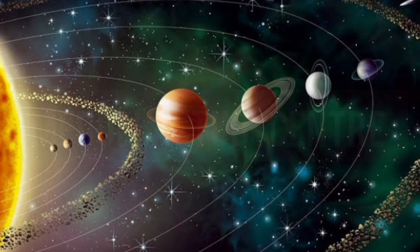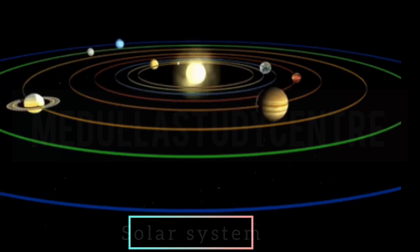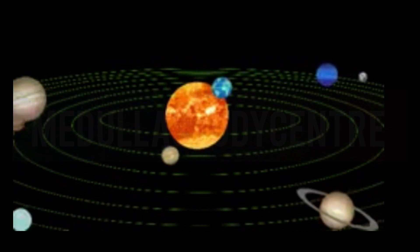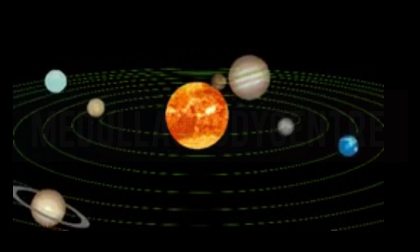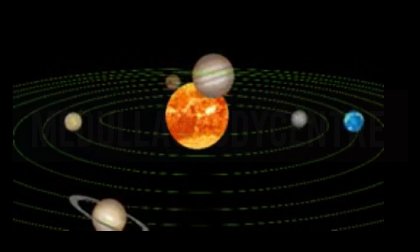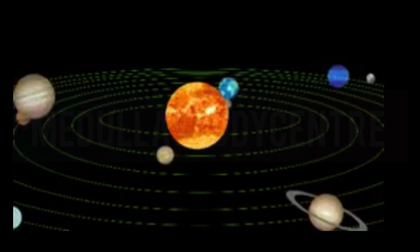We can also call it solar family in which the sun is the head of family. The sun is located in the center of the solar system. It is a huge ball of hot gases. This is a star having its own heat and light and it is the main source of heat and light. And all planets, stars, satellites and small pieces of rocks move around the sun.